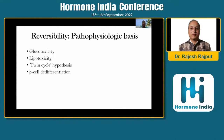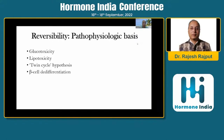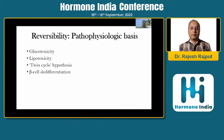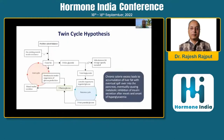Whenever we discuss the concept of reversibility or remission, we have to understand the known concept of glucotoxicity and lipotoxicity in patients of diabetes, which is responsible for decrease in pancreatic beta cell function as well as decreased neutralization of glucose in peripheral tissue. Very recently, the twin cycle hypothesis has been given to understand lipotoxicity, beta toxicity, and beta cell de-differentiation.